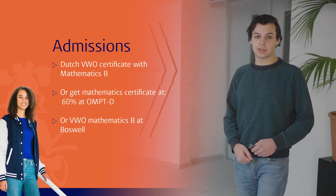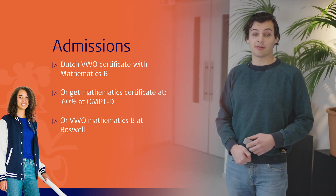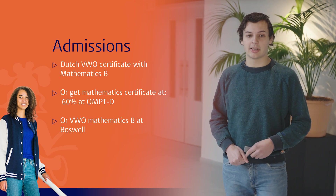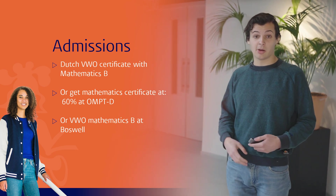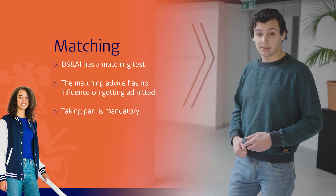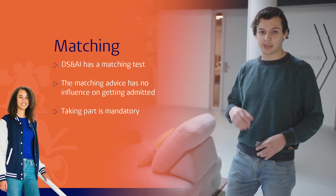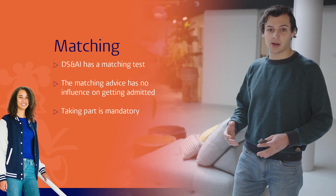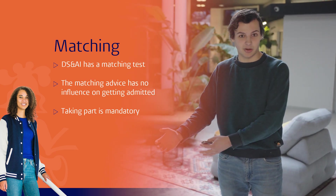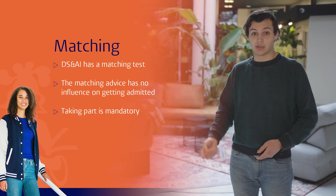Admission and application. To do this bachelor at Leiden you need certain admission requirements. If you are Dutch you need a VBO certificate with mathematics B. If you are from outside the Netherlands or don't have the mathematics B certificate you probably need to get a mathematics certificate — you can do this either at OMPTD with at least 60%, or at Pulsewell. There's also a mandatory matching part — a matching test you have to complete. It is not about achieving a high score but about seeing if you actually like this program. If you fail the test they will simply have a talk with you, but you will still be admitted to the program.